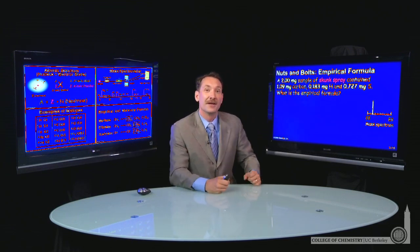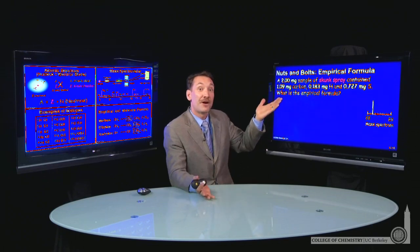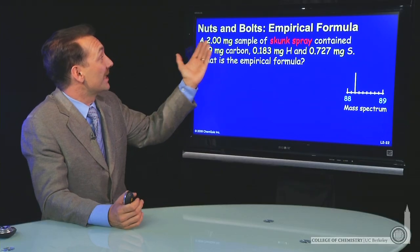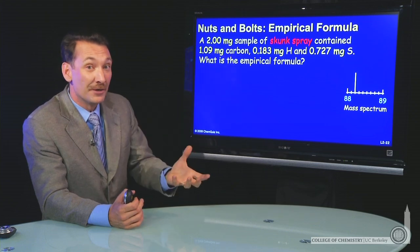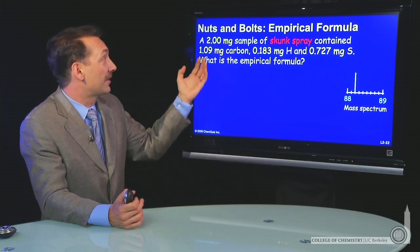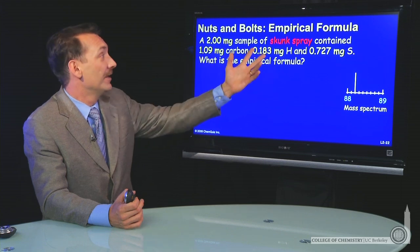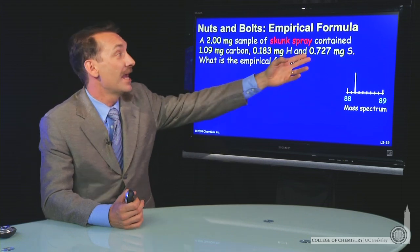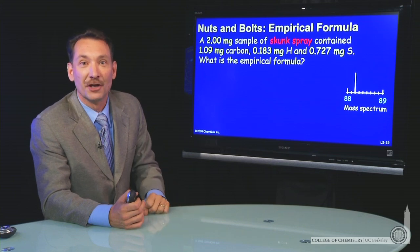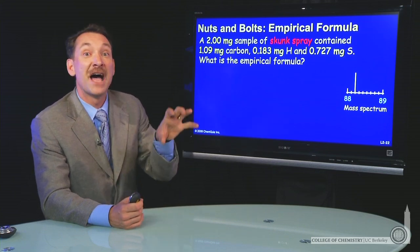Let's look at a calculation involving these empirical formulas. It's going to involve skunk spray. We're going to take skunk spray, a 2 milligram sample, and break it down into its components. Carbon will contain 1.09 milligrams, it'll contain 0.183 milligrams of hydrogen and 0.727 milligrams of sulfur. Those are the mass ratios.